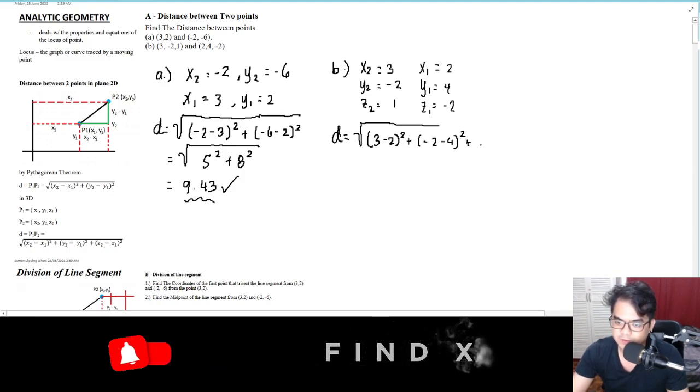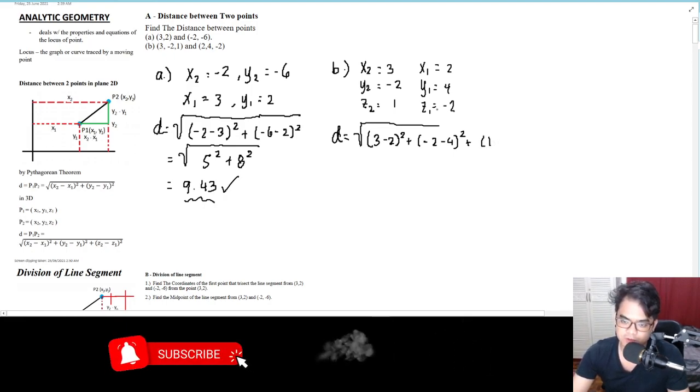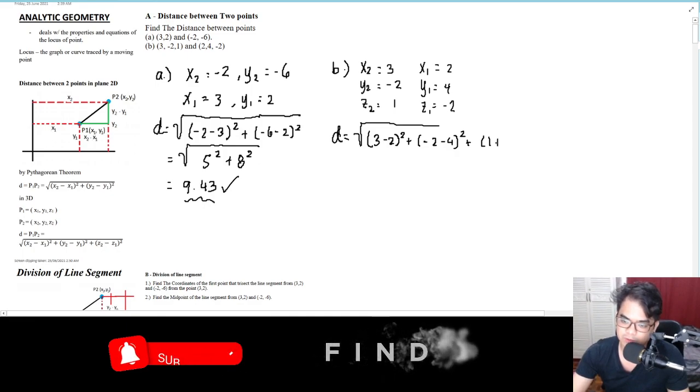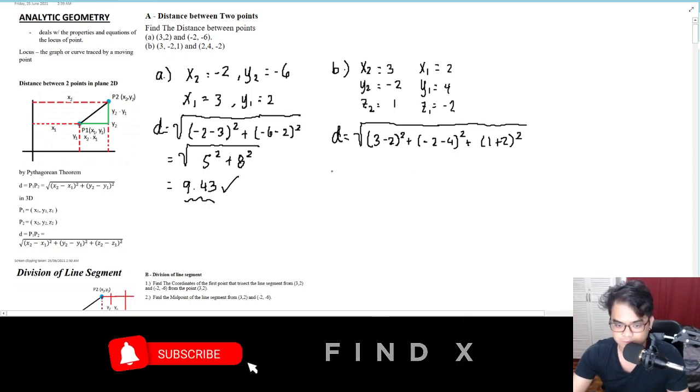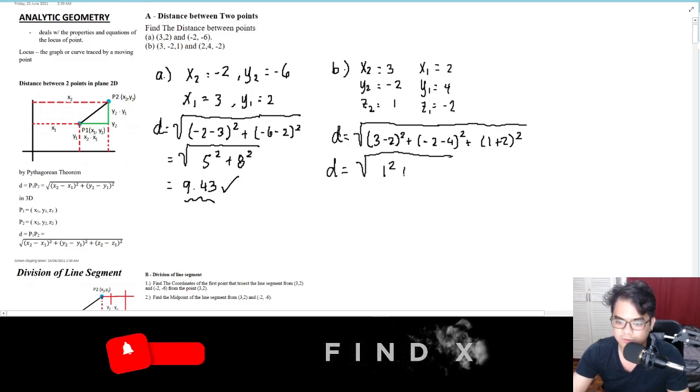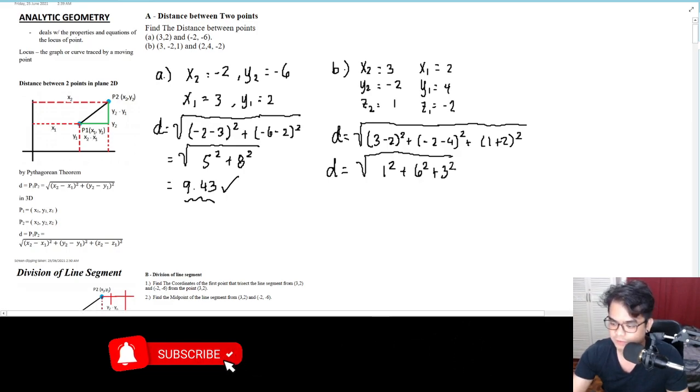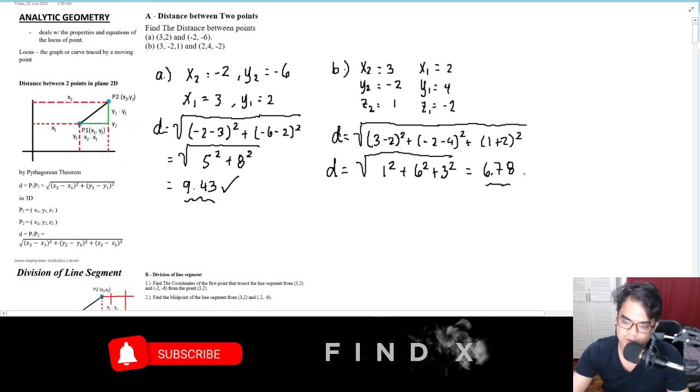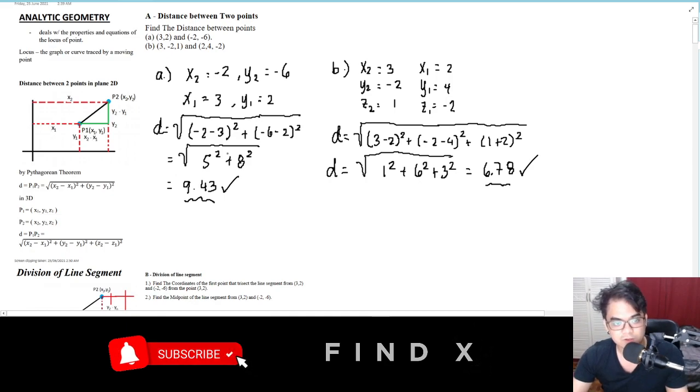1 minus negative 2. Negative minus negative will become plus, so this is negative negative, it becomes plus. If you enter that in your calculator, you will have 1² plus 6² plus 3², and the answer is 6.78. You can also try this one in your calculator. That's it for this topic, distance between two points. Let's move on to the next topic.